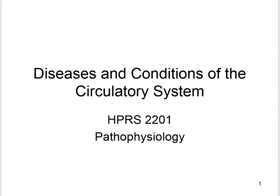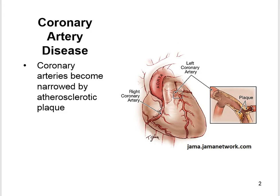This is part one of Diseases and Conditions of the Circulatory System. Coronary artery disease: the coronary arteries become narrowed by atherosclerotic plaque which lines the lumen of the coronary arteries.